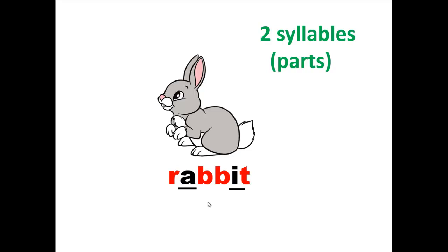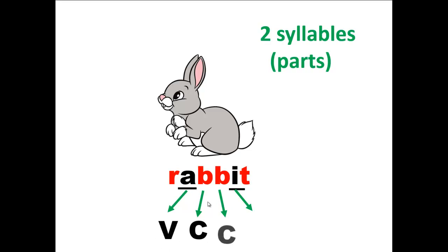Let's start with the first vowel sound. The next sound is consonant, the sound after that is consonant, and then a vowel sound. So this word follows the order of VCCV. We divide the word between the consonants.